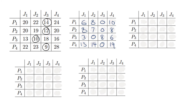Now we need to find the minimum number of lines required to cover all the zeros in the table. We've only got four zeros. It doesn't matter which way you draw the lines as long as you find the minimum. We can draw one line and then a second line going through person two. We can clearly see the number of lines — only two — doesn't match the four people, so we cannot allocate yet.